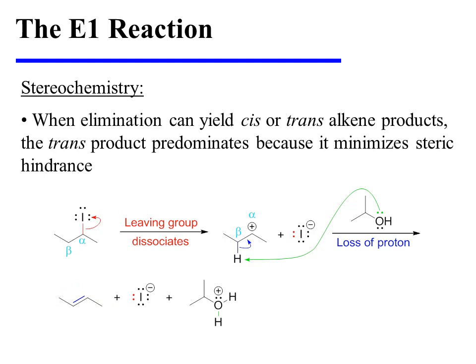When elimination can yield cis or trans alkene products, the trans product predominates because it minimizes steric hindrance. In this example, iodide dissociates from the secondary alkyl iodide substrate, and the secondary carbocation that results then loses a proton from the adjacent beta position to yield the more highly substituted alkene product, which in this case is a di-substituted alkene. When the proton is lost from the beta position, the cis or trans alkene product can be formed, but the trans product is the major product because it suffers from less steric encumbrance.